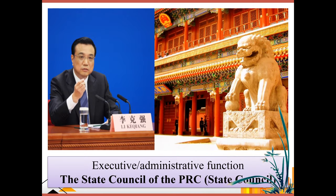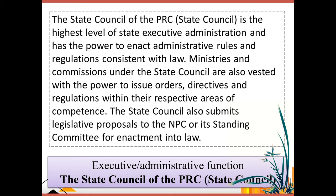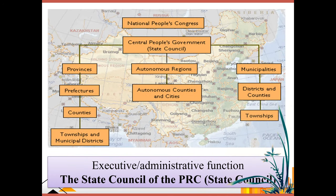The State Council is the central government of China, composed of many ministries or departments. Each department, including the State Council itself, has the power to make regulations, rules, and orders which are nationally binding. This is the hierarchy of governments in China — the State Council is at the national level, with only one central government in mainland China.